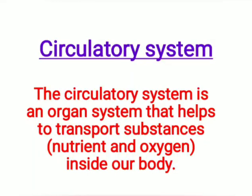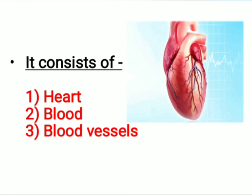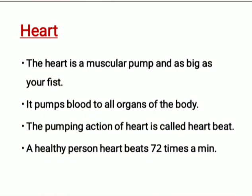What is the circulatory system? The circulatory system helps to transport essential nutrients and oxygen inside our body. It consists of the heart, blood, and a network of blood vessels. The heart is a muscular pump that pumps blood into the blood vessels to reach all organs of the body. It also receives blood from all the organs of the body.